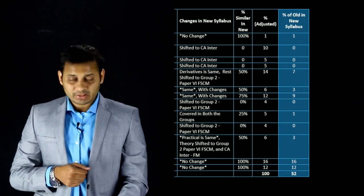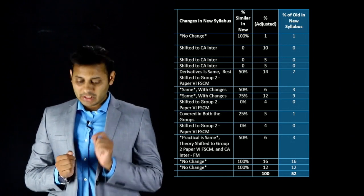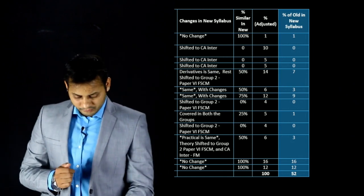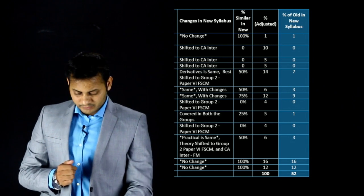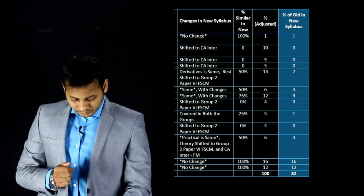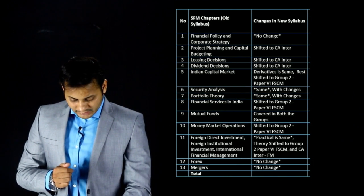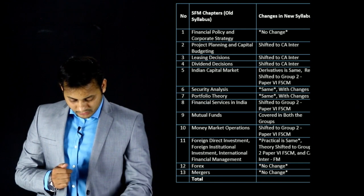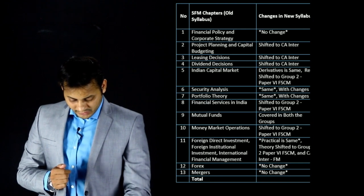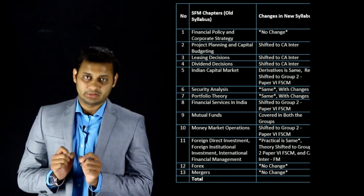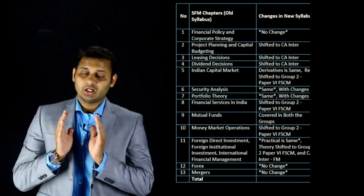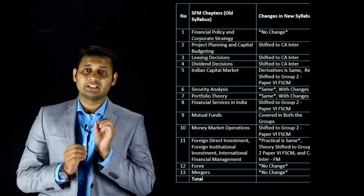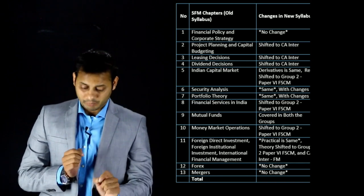The third column tells what changes have been made in the new syllabus — how the old syllabus chapters have been treated in the new syllabus, and what percentage change has come in each chapter. You can see that there are 13 chapters according to the old syllabus of Strategic Financial Management.